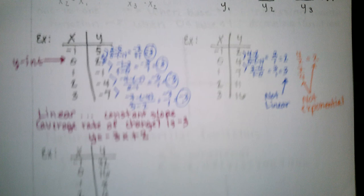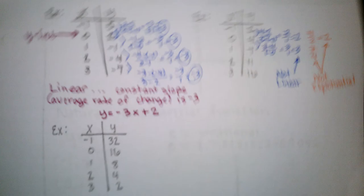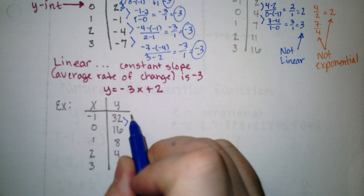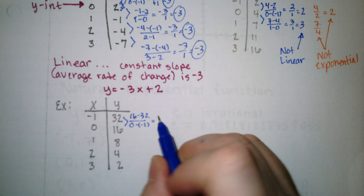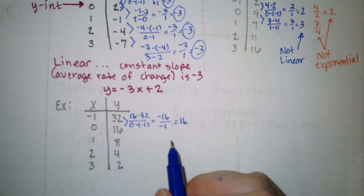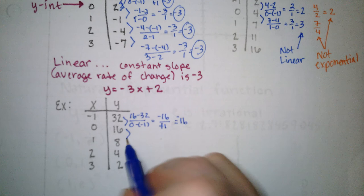Go to the next one. Check our slopes. So that's 16 minus 32 over 0 minus negative 1. So that is negative 16 over 1. So 16. Then 8 minus 16 over 1 minus 0. So that's negative 8 over 1. So it's not linear.